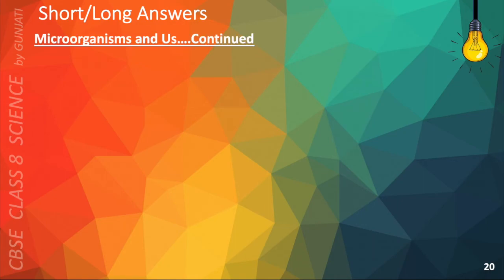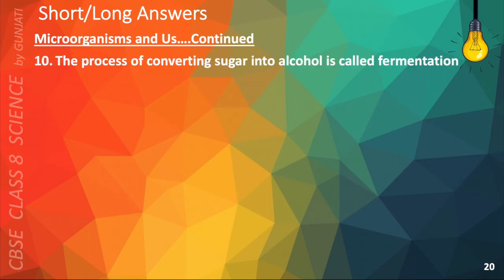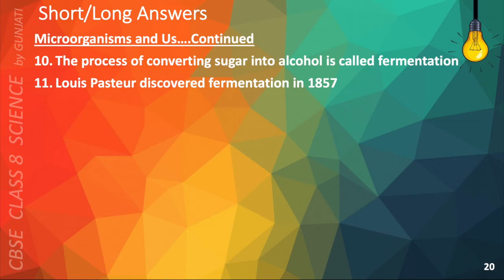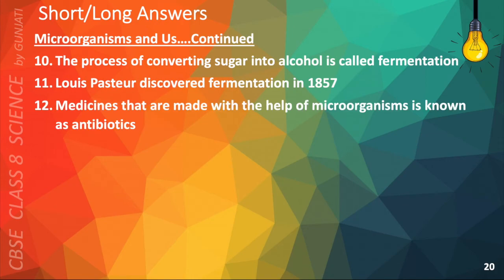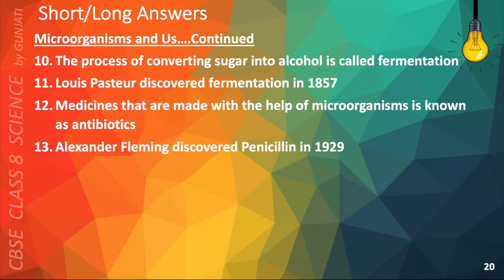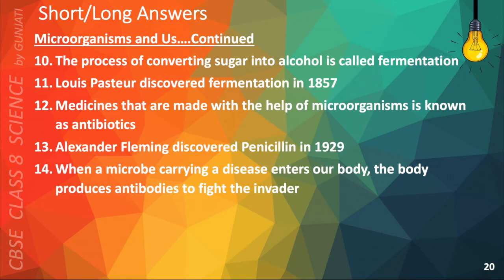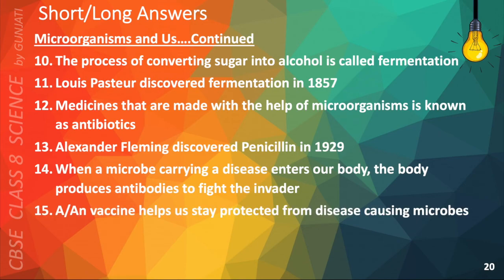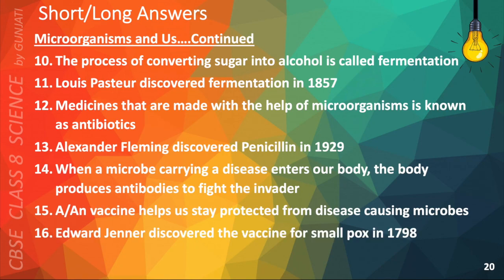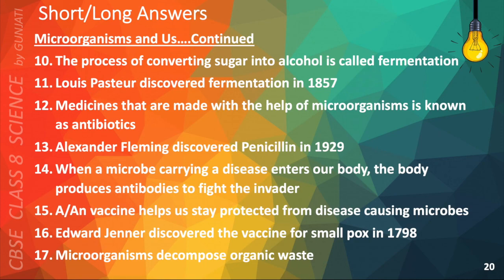The following points will also help you answer questions on microorganisms and us. The process of converting sugar into alcohol is called fermentation. Louis Pasteur discovered fermentation in 1857. Medicines that are made with the help of microorganisms are known as antibiotics. Alexander Fleming discovered penicillin in 1929. When a microbe carrying a disease enters our body, the body produces antibodies to fight the invader. A vaccine helps us stay protected from disease-causing microbes. Edward Jenner discovered the vaccine for smallpox in 1798. Microorganisms decompose organic waste.